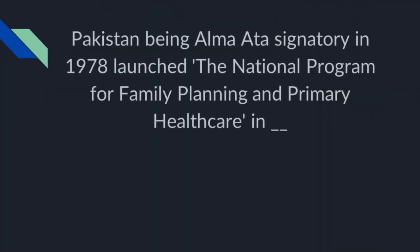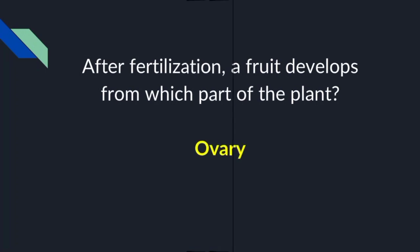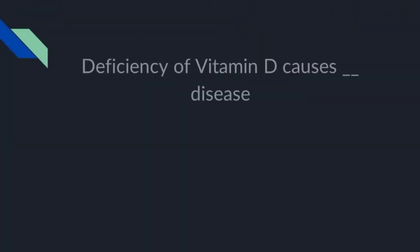Pakistan, being an Alma-Ata signatory in 1978, launched the national program for family planning and primary health care in 1994. After fertilization, a fruit develops from which part of the plant? Ovary. Deficiency of Vitamin D causes Rickets disease.